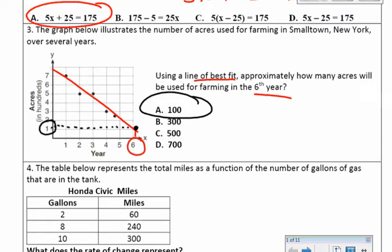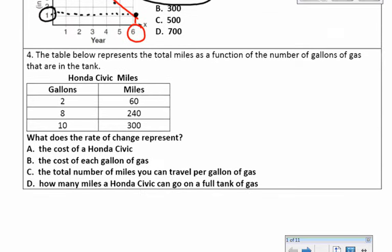According to the line of best fit, it lands at 1 on the y-axis, and since acres are in hundreds, that's actually 100 acres. So A is your answer for number 3. Number 4: the table represents total miles as a function of gallons of gas. The question asks what the rate of change represents. Choice A mentions the cost of a Honda Civic — they're talking about gallons and miles here, not costs, so eliminate that. Choice B, the cost of each gallon — also not about cost, so eliminate B. Choice C, the total number of miles you can travel per gallon of gas — it is talking about miles and gallons, so C is the best choice.